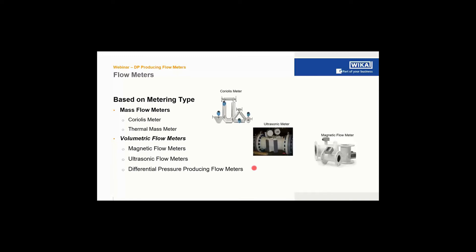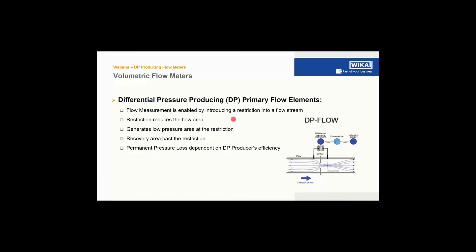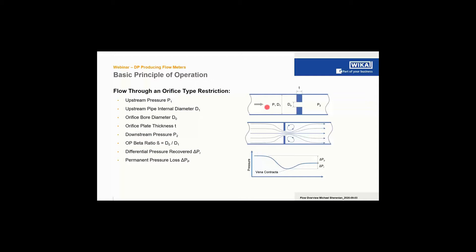Differential producing flow meters operate by inserting a restriction device or primary element in the flow stream to create a pressure drop or differential in order to measure the flow. This primary flow element has a smaller cross section than your pipe, and as the flow goes through it, it produces a differential which can be measured. Downstream of that primary element, the pressure recovers. You have a pipe with upstream conditions, a P1 pressure, and internal diameter D1.